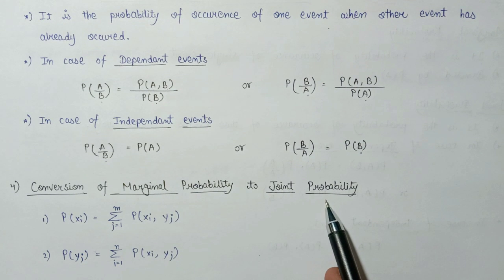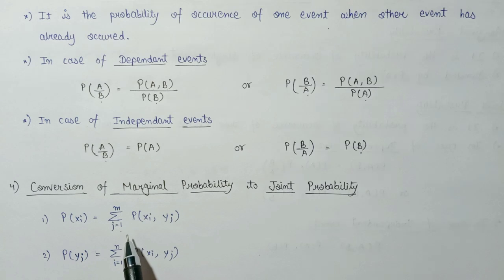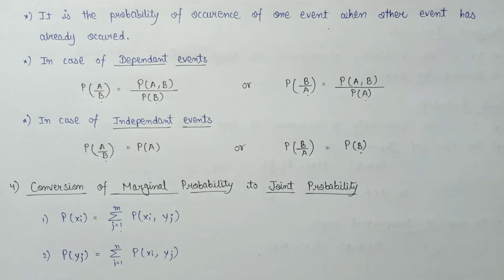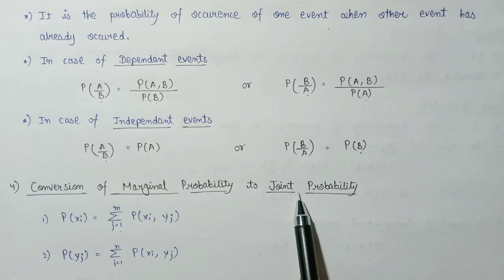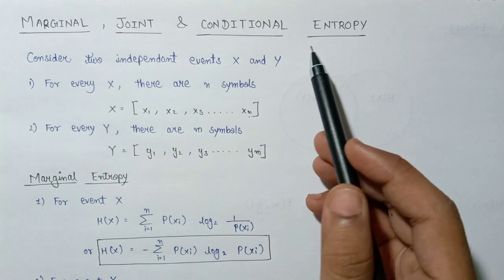Now let us look at the conversion of marginal probability into joint probability. The formula is: P(Xi) equals the summation over j from 1 to M of the joint probability P(Xi, Yj). Similarly, to convert P(Yj) in terms of joint probability, we write it as the summation over i from 1 to N of the joint probability of event X and Y. That is all about conditional probability and the conversion from marginal to joint probability.